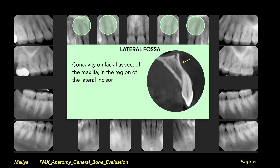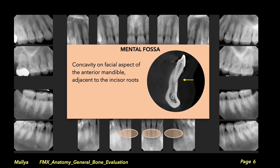Most importantly, you will note that the lamina dura surrounding the teeth is intact. This indicates that there is no apical periodontal inflammation. Thus, by ruling out disease, you establish normalcy of that radiolucent area.